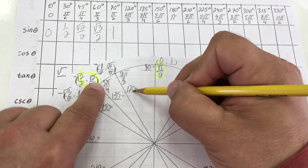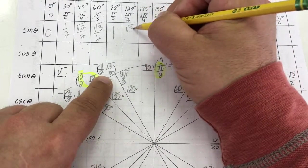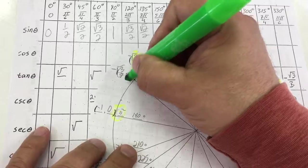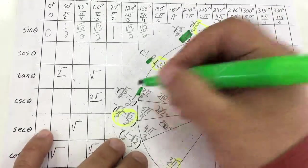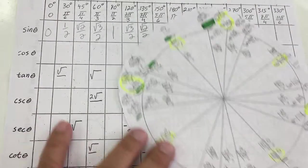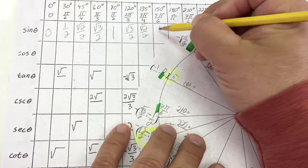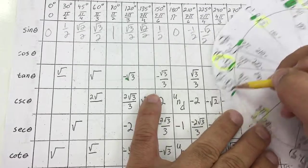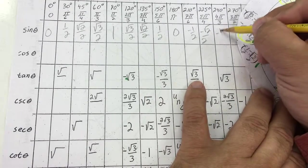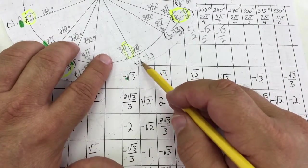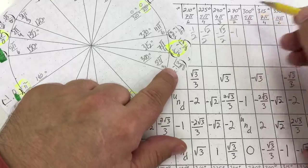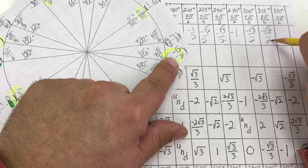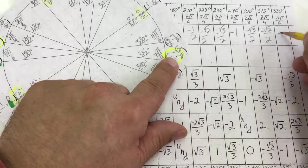The y value at 120 degrees is root 3 over 2. The y value at 135 degrees is root 2 over 2. The next y value is going to be 1/2, then 0, then negative 1/2, then negative root 2 over 2, then negative root 3 over 2. Then 1/2, then 0, then negative 1/2, then negative root 2 over 2, then negative root 3 over 2. The y value at 270 degrees is negative 1. The y value at 300 degrees is negative root 3 over 2. The y value at 315 degrees is negative root 2 over 2. And finally, the y value at 330 degrees is negative 1/2.